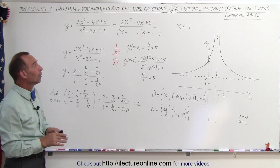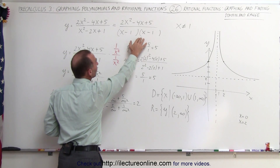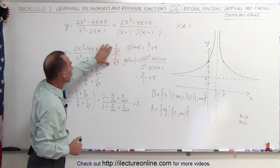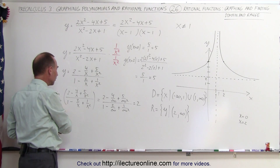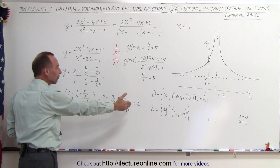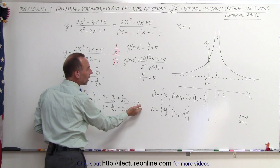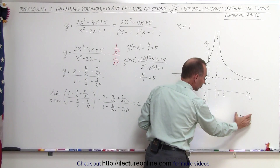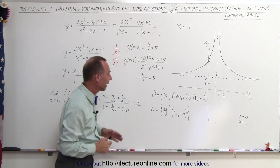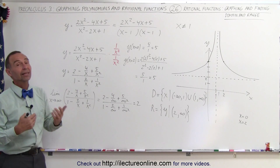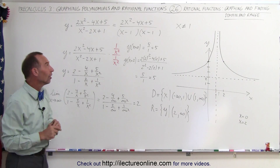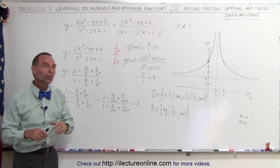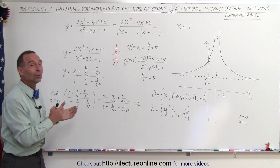To summarize the technique: identify what x cannot be in the denominator to find the vertical asymptote, then rewrite the function by multiplying by 1/x squared to take the limit as x goes to infinity and find the horizontal asymptote. Test points on either side of the vertical asymptote let us sketch the graph, from which we read the domain and range. There are nuances when one exponent is larger than the other — whether it's bigger on top or bottom — and we'll cover those cases in upcoming examples, so stay tuned.